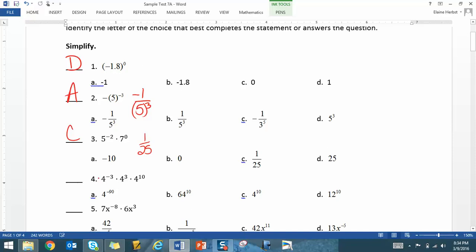Be careful on number 4. These 4's are not coefficients. These 4's are bases, and so when you have like bases, we add the exponents. So you're doing negative 3 plus 3 plus 10, so that's 4 to the 10th, or letter C.